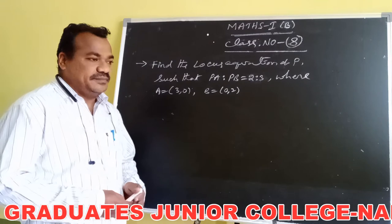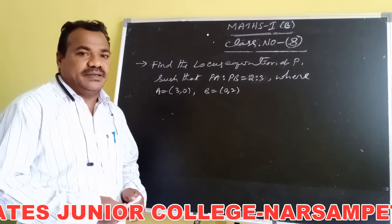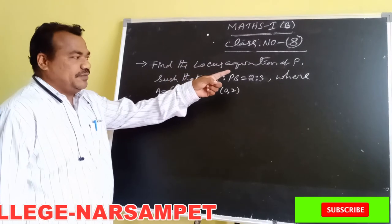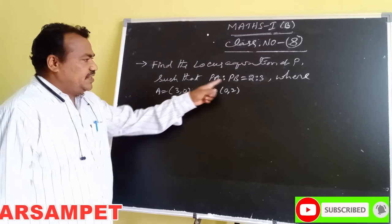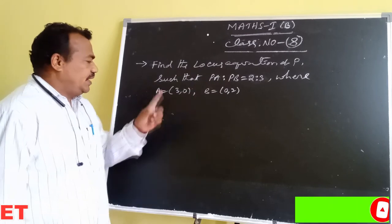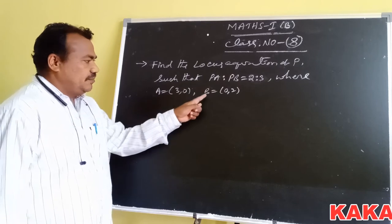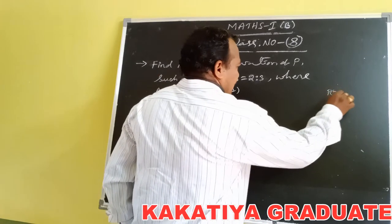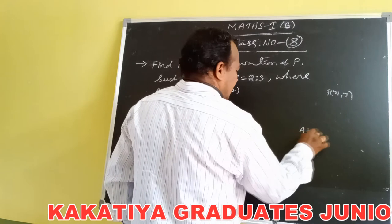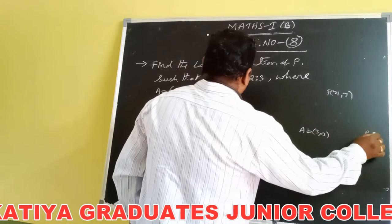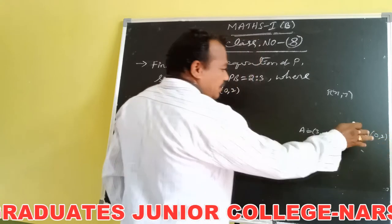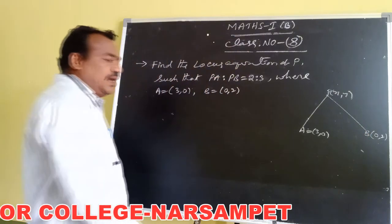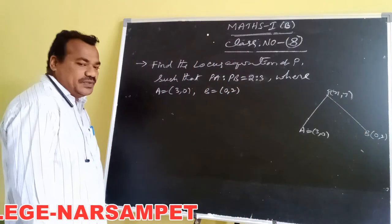These are some exercise problems based on the topic locus. The problem is: find the locus equation of P such that PA is to PB is equal to 2 is to 3, where A is equal to (3, 0) and B is equal to (0, 2). The locus point coordinates are X comma Y. Taking the rough diagram, the ratio of the distances from P to A and P to B is in the ratio 2 is to 3.